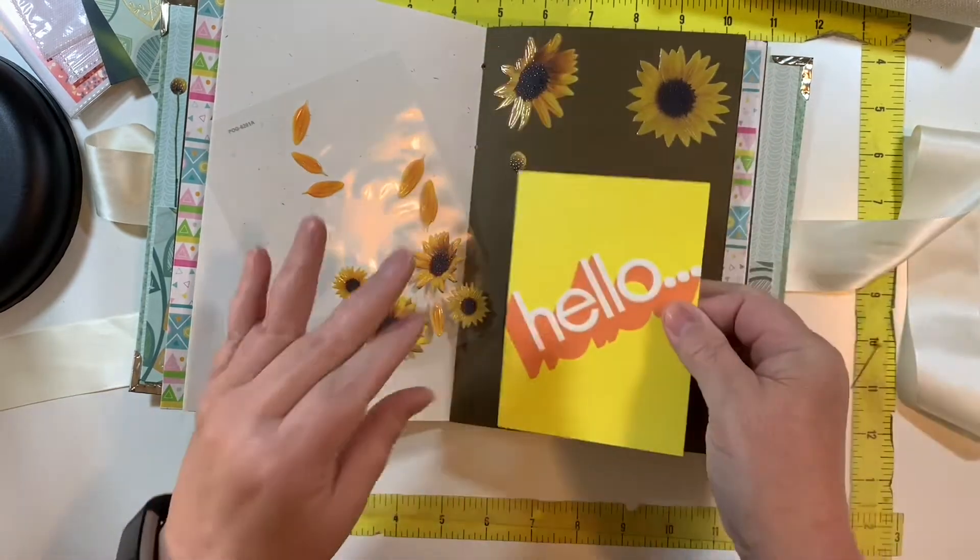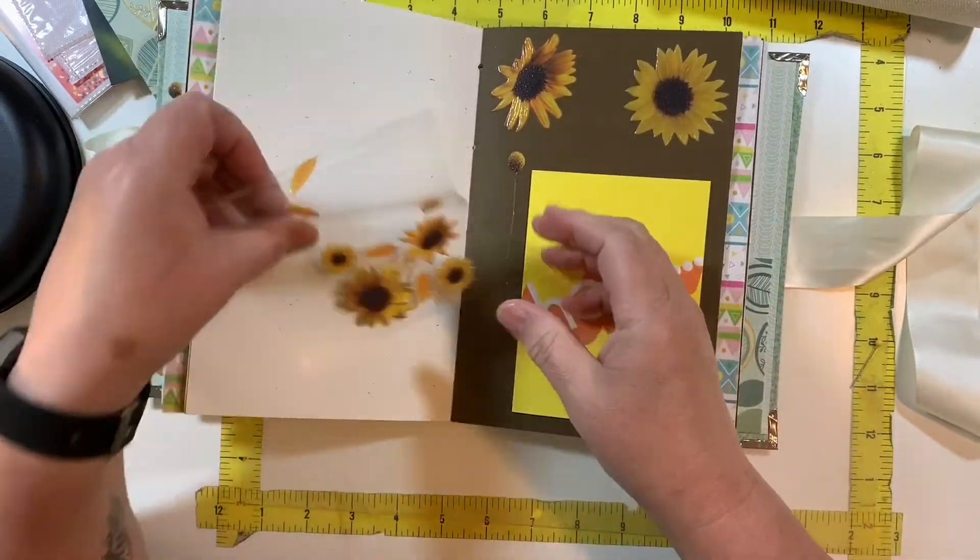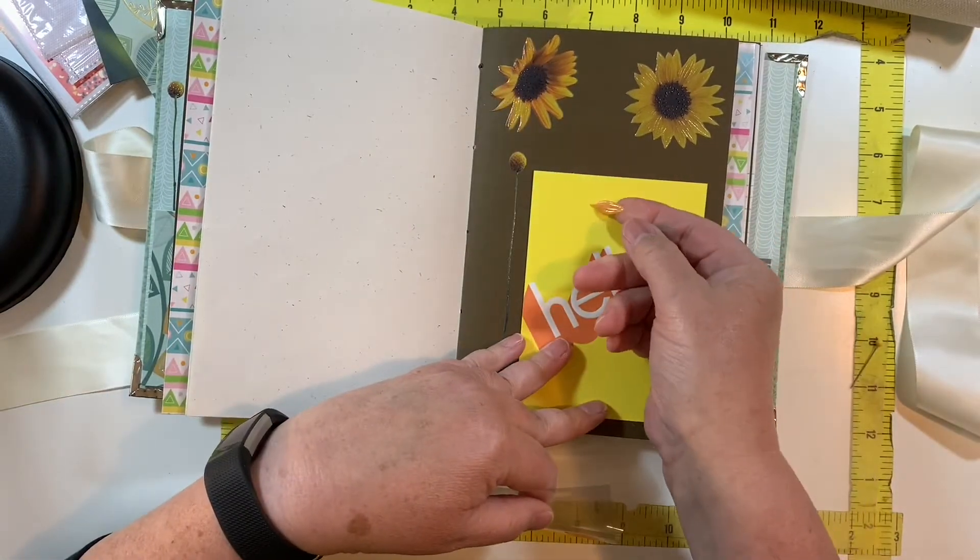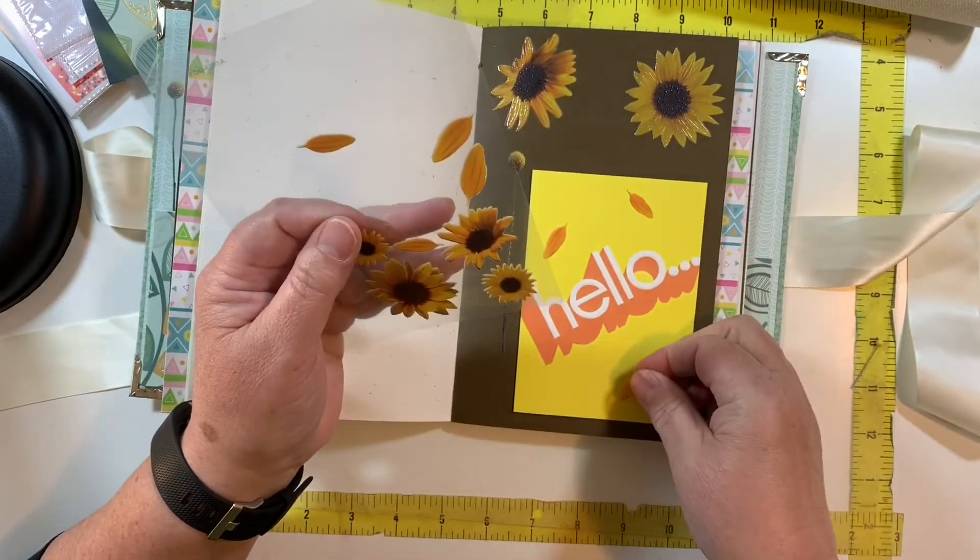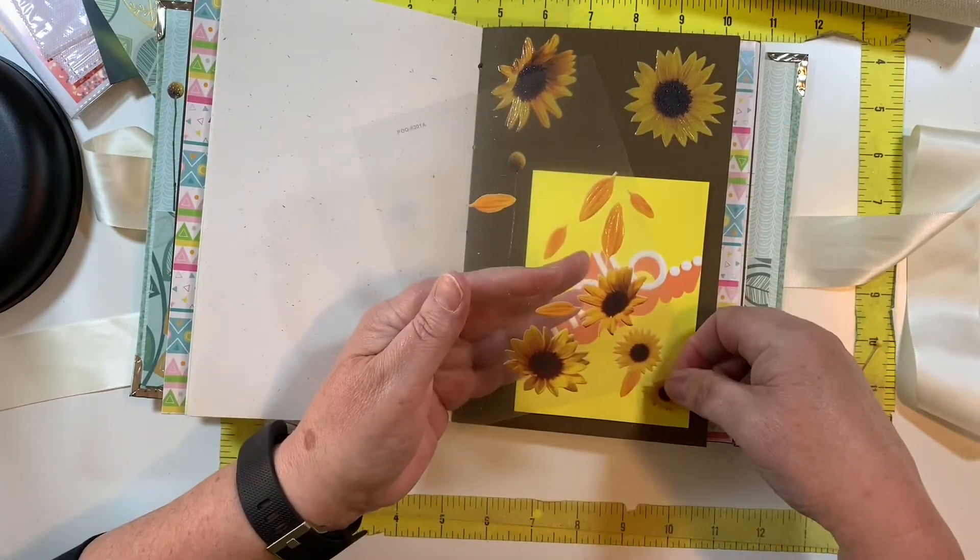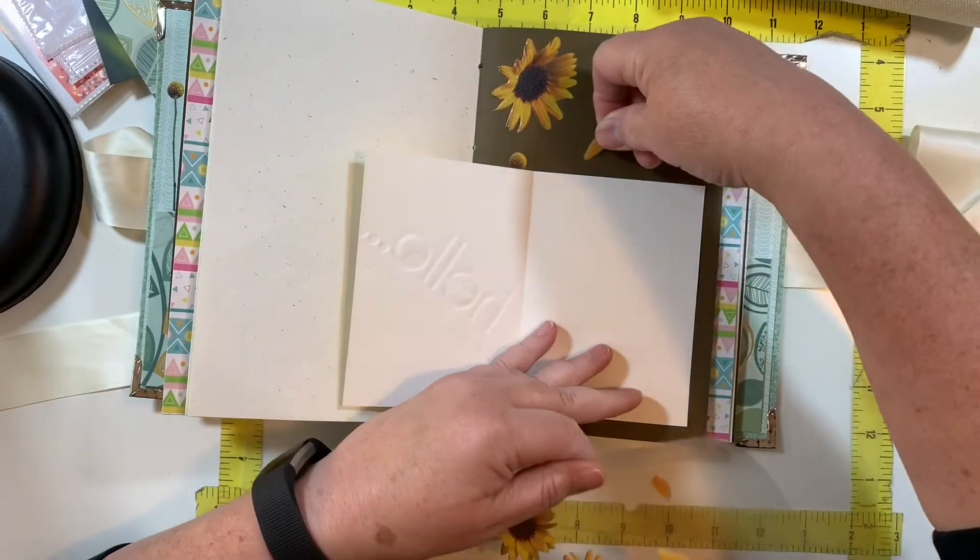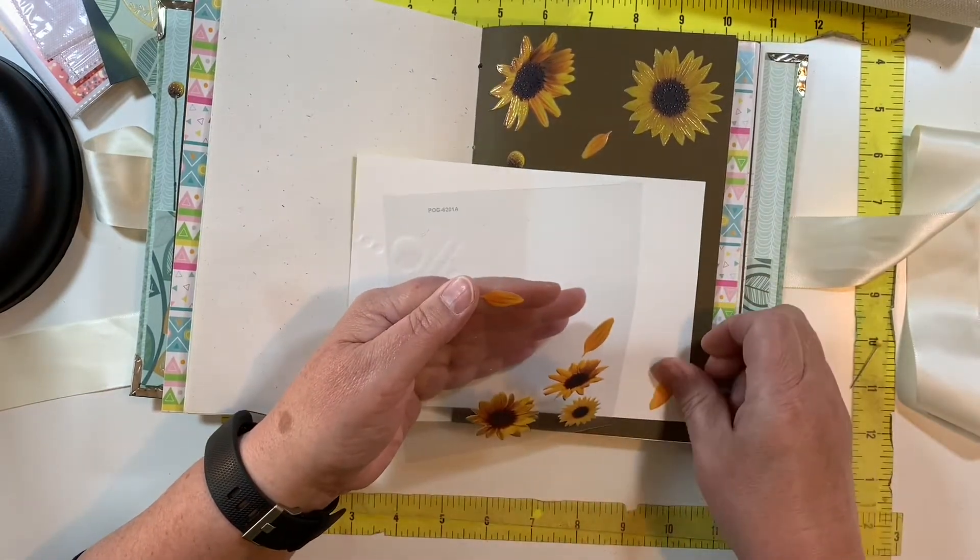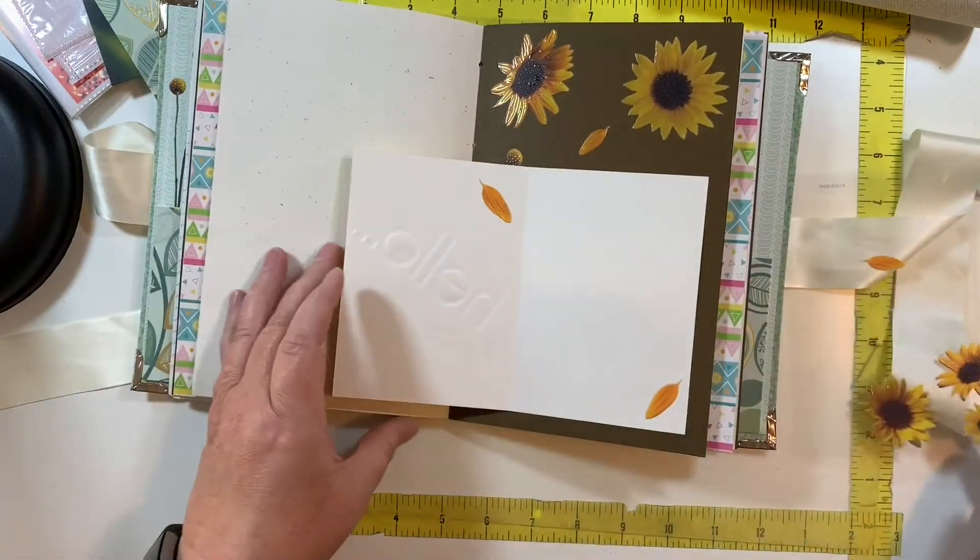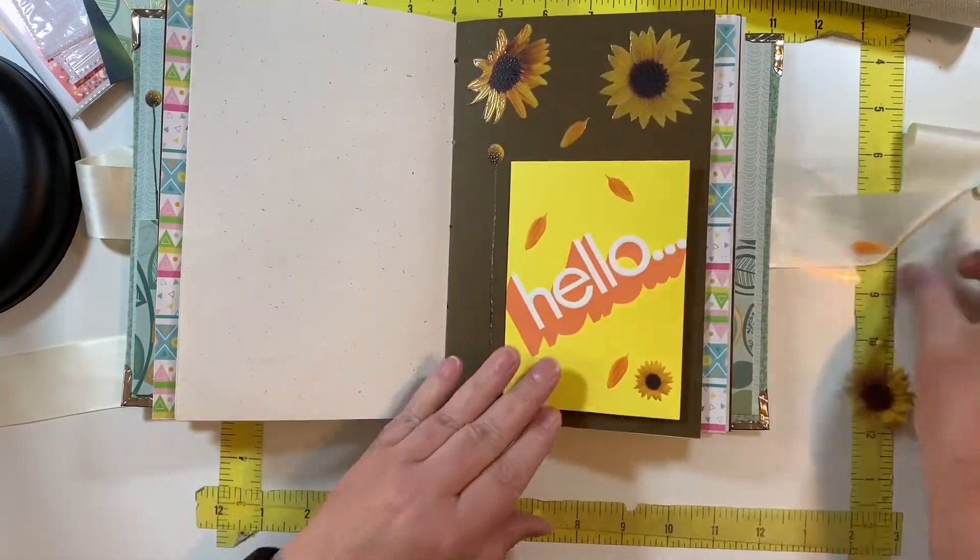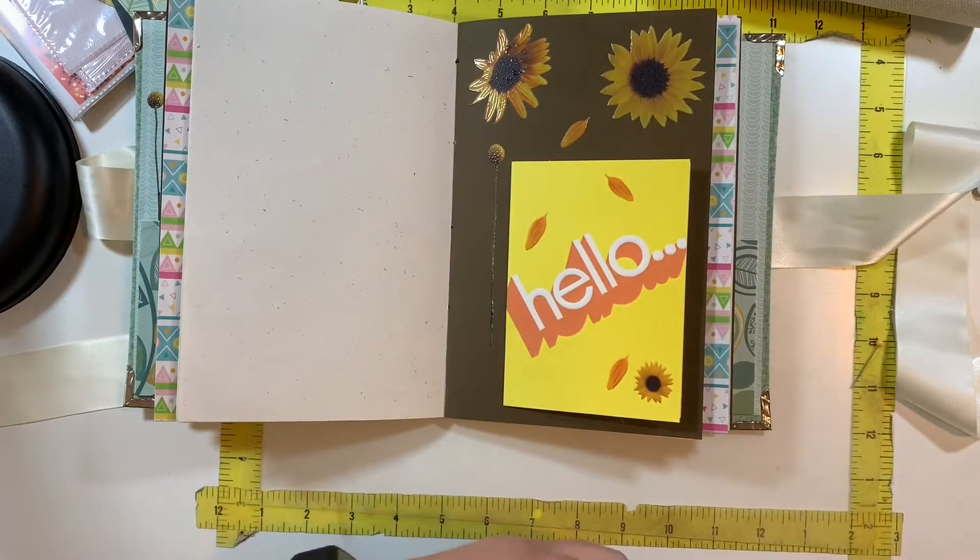Let's glue this down and we'll make it a side pocket. Side tuck spot. So we'll glue down on these three sides. There we go, okay.